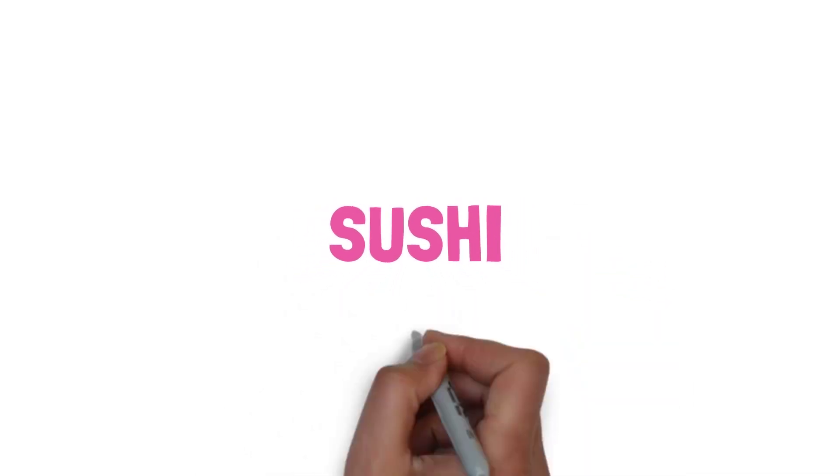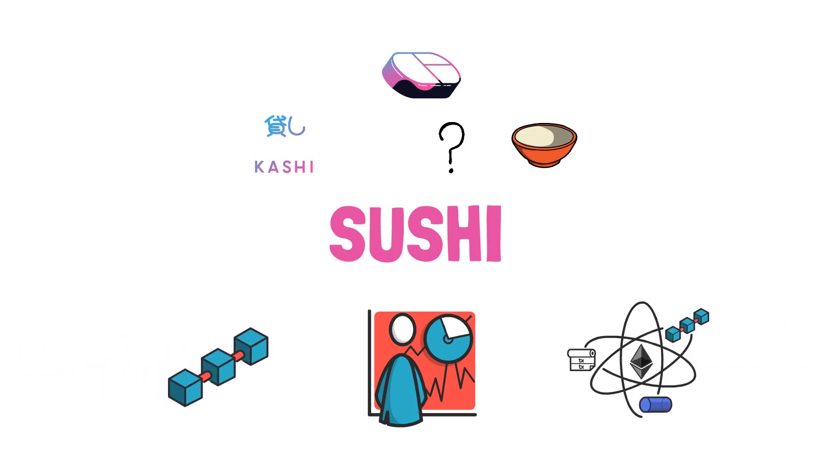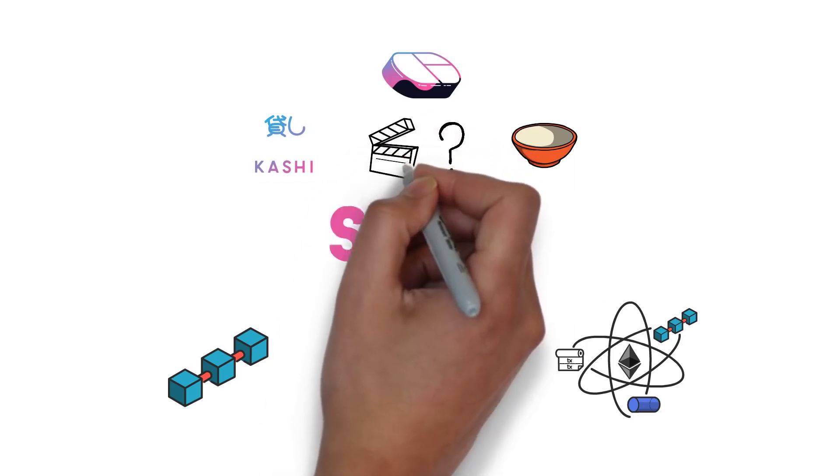So why is Sushi believed to be one of the most underrated protocols in DeFi? What are some of its new features such as BentoBox, Kashi and Miso all about? And what is Sushi's approach to launching on different blockchains and scaling solutions? You'll find answers to these questions in this video.